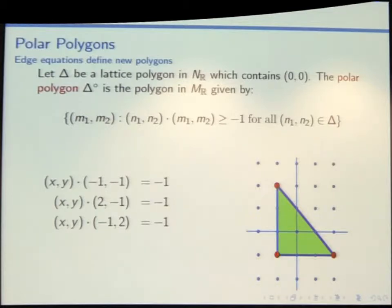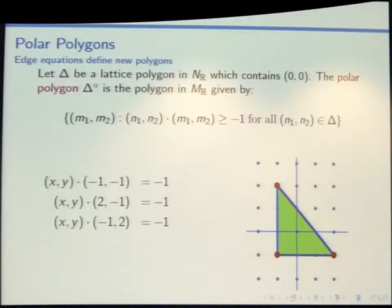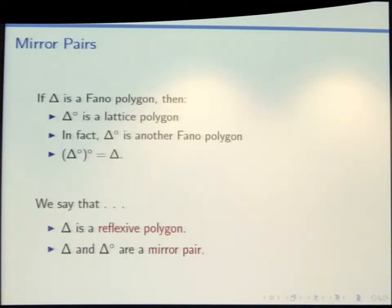We've got a new triangle. This is a very nice triangle — it still has its vertices at lattice points — but if you care about lattice information, this is definitely not the same triangle that we started with. We started with a triangle that only had three boundary lattice points plus the origin, and now this one has one more. It's got lots more lattice points.